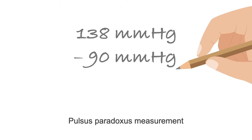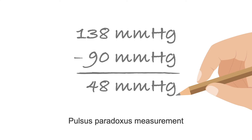Recall the pressure was 138 mmHg when we heard the first Korotkoff sound, and it was 90 mmHg when we started to hear a sound with every heartbeat. So the pulsus paradoxus measurement would be 138 mmHg minus 90 mmHg, which equals 48 mmHg.